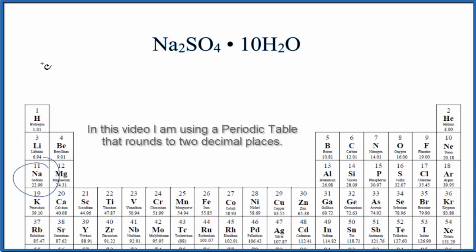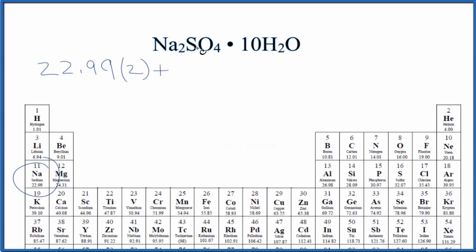Sodium on the periodic table is 22.99 grams per mole. I won't write that each time. We have two sodium atoms, so we're going to multiply that by two, plus the sulfur. We only have one sulfur. Sulfur, that's 32.07 grams per mole.